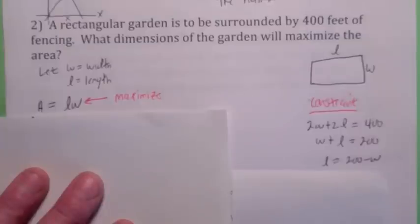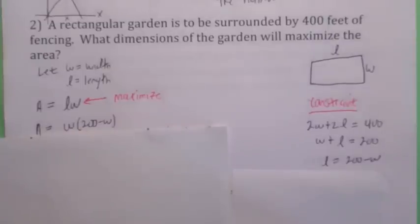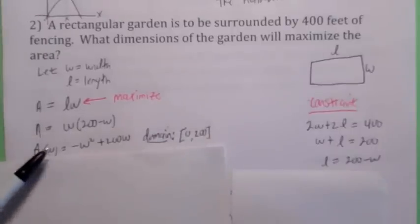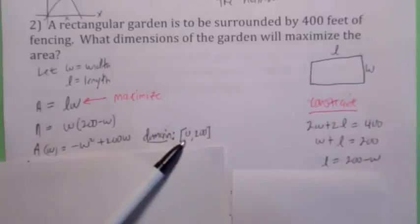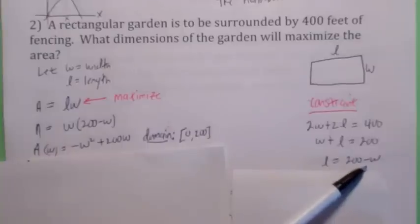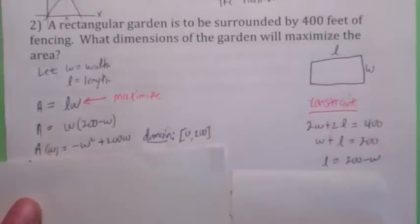So you go back to your area function. Wherever there's an l, you replace it with 200 minus w. Our goal is to write the area in terms of one unknown. The domain is worth noting here as well. The width cannot be negative, so 0 is the smallest value. But also the width can't be bigger than 200, because if the width is bigger than 200, then l would be negative, which is impossible. So the domain here is 0 to 200.